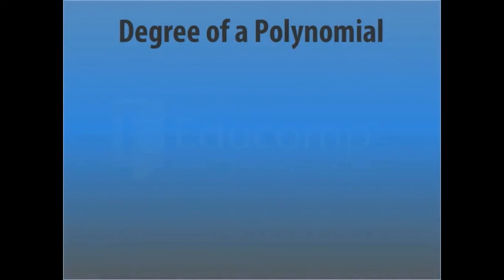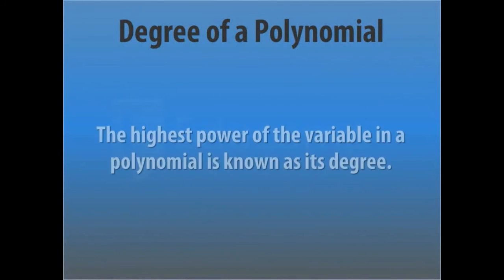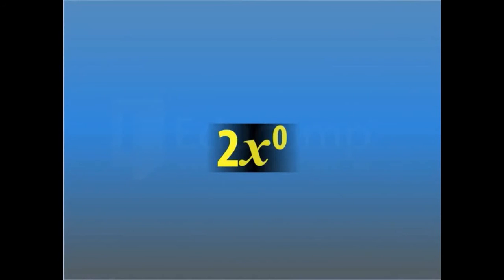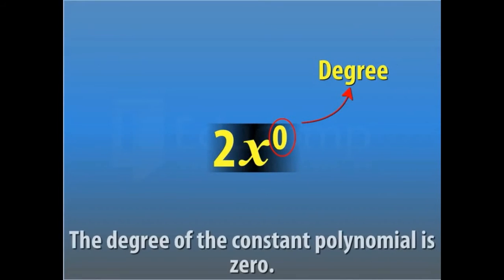Now let's find out about the degree of a polynomial in one variable. The highest power of the variable in a polynomial is known as its degree. The degree of this polynomial is 5. Now let's look at the constant polynomial 2 — it can be represented as 2 into x raised to the power 0, so the degree of this constant polynomial is 0.